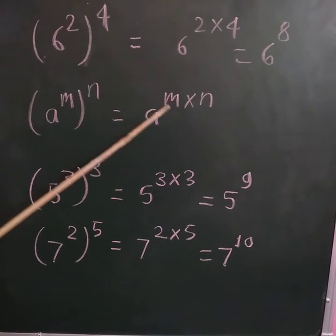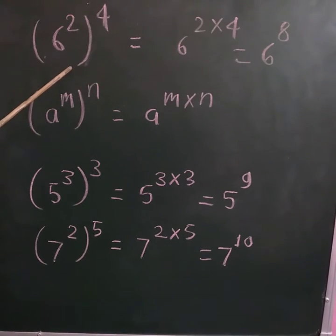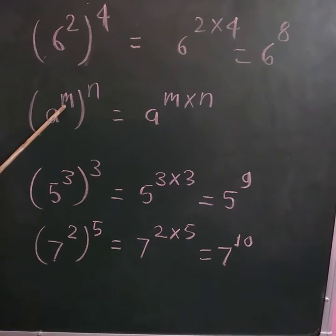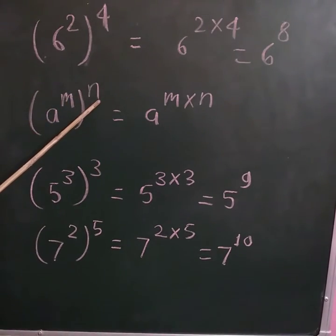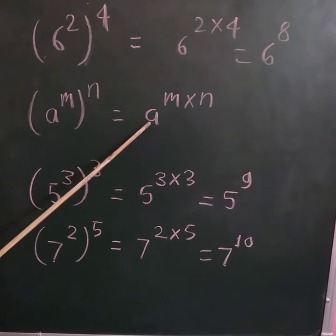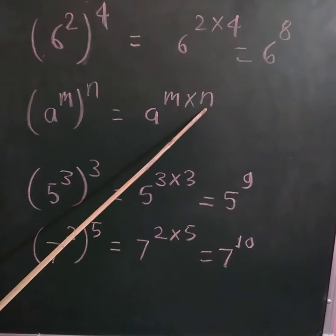Now, which formula? The general formula to solve this type of example is: suppose A raised to the power m, whole raised to the power n, equals A raised to the power m multiplied by n.